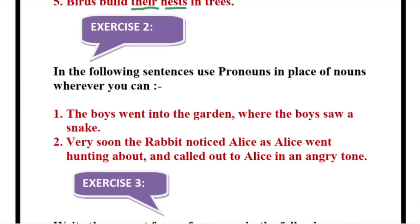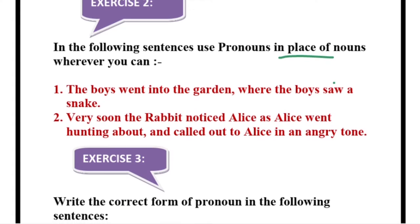Coming to Exercise Two — this is a very small exercise. In the following sentences, use pronouns in the place of nouns. First: 'The boys went into the garden where the boys saw a snake.' What are you repeating? 'The boys.' So: 'The boys went into the garden where they saw a snake.' Number two: 'Very soon the rabbit noticed Alice. As she went hunting about and called out to Alice, she called out to her in an angry tone.'